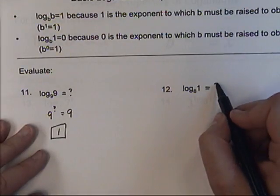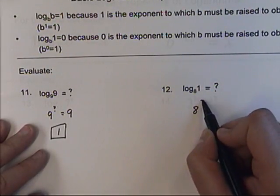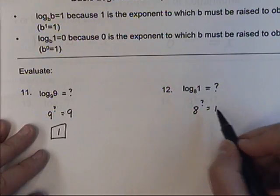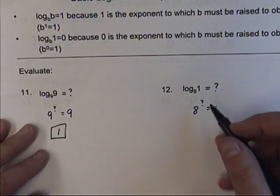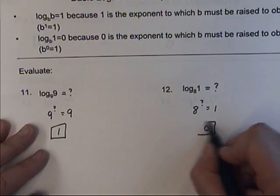Or, in this case, 8 raised to what power equals this number here? 1. Well, it would be 0, because anything raised to the 0 power is 1.